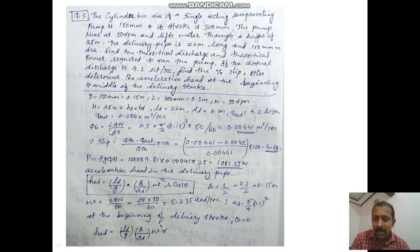Q theoretical is LAN by 60. We know the values L and N, and we can calculate the area pi by 4 D squared. So we'll get Q theoretical as 0.00441 meter cube per second.